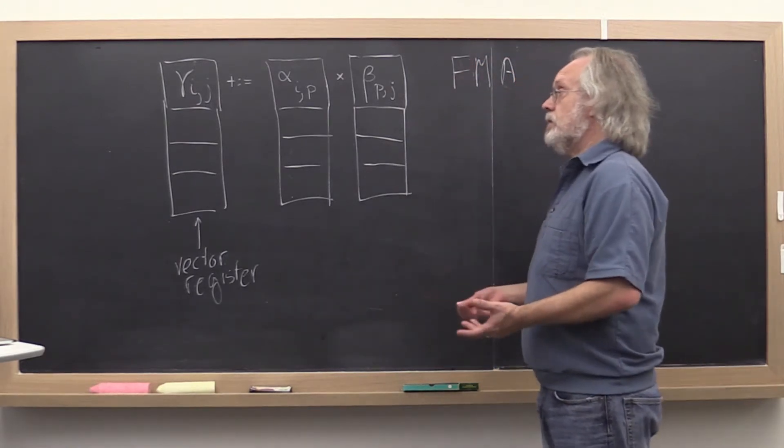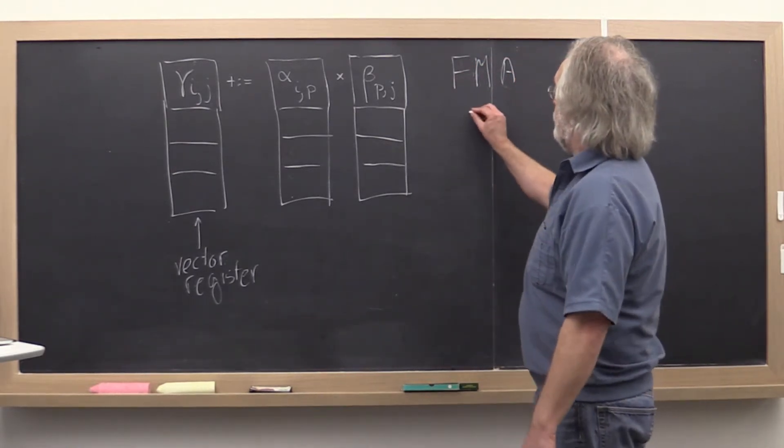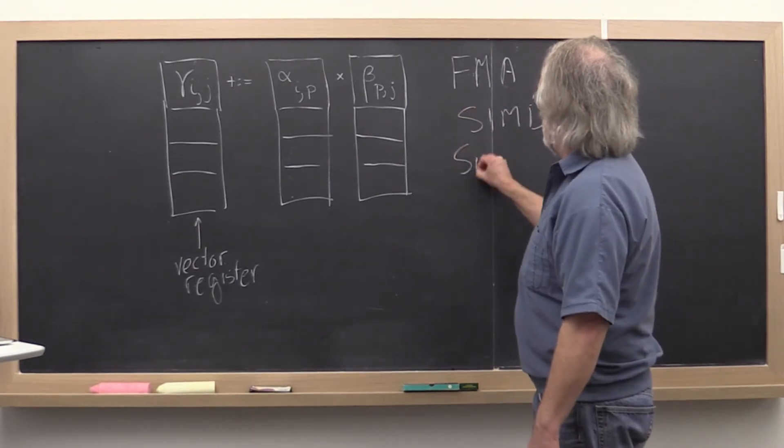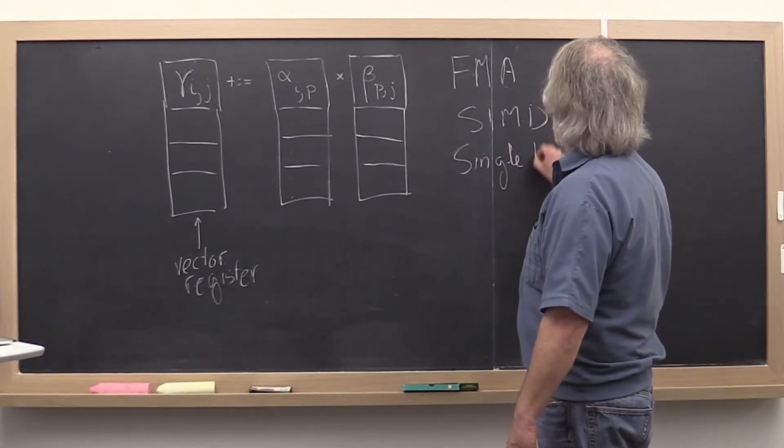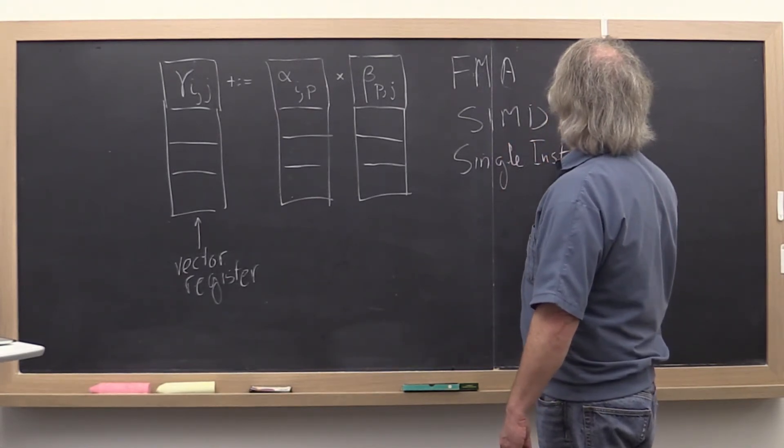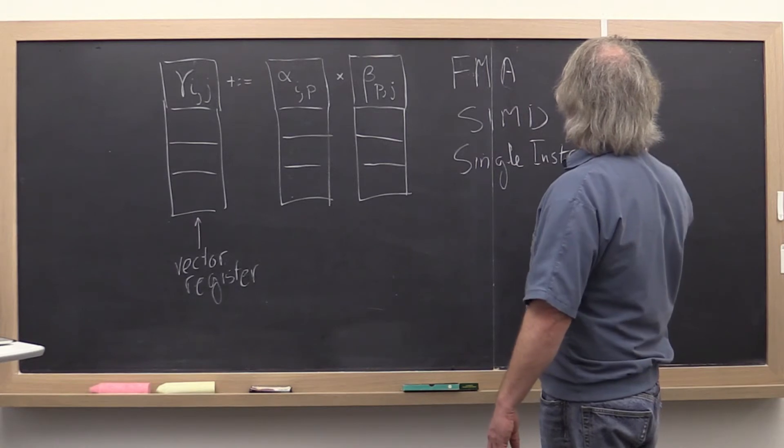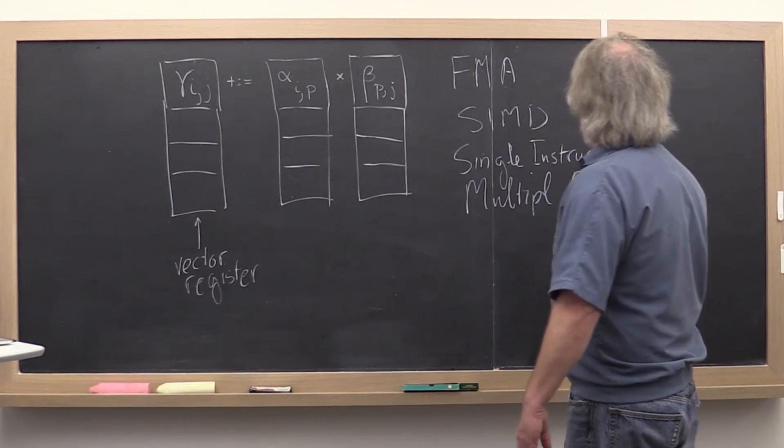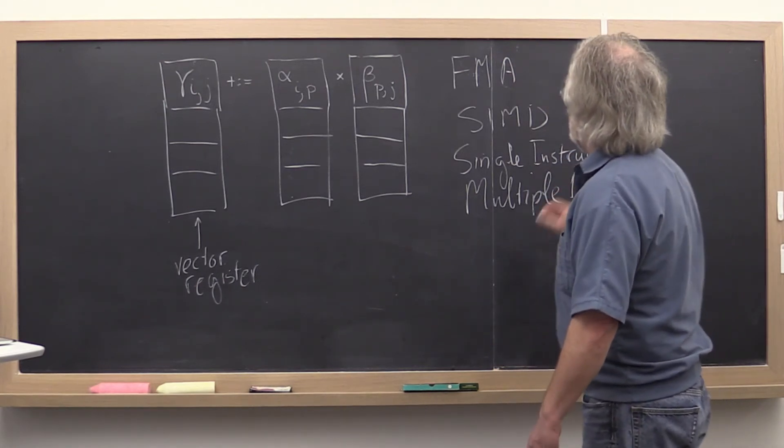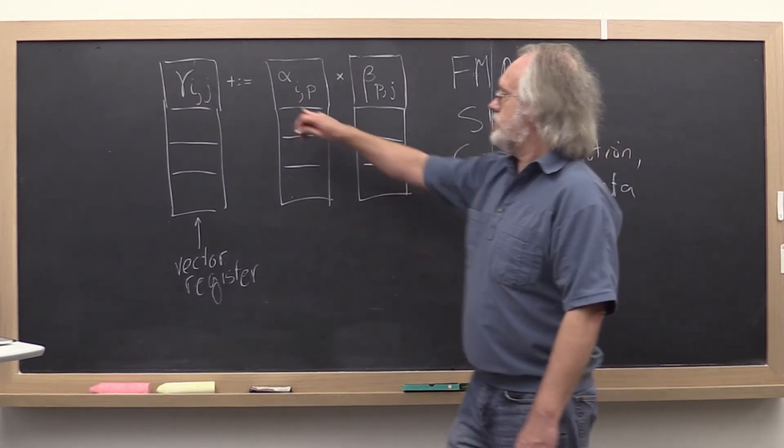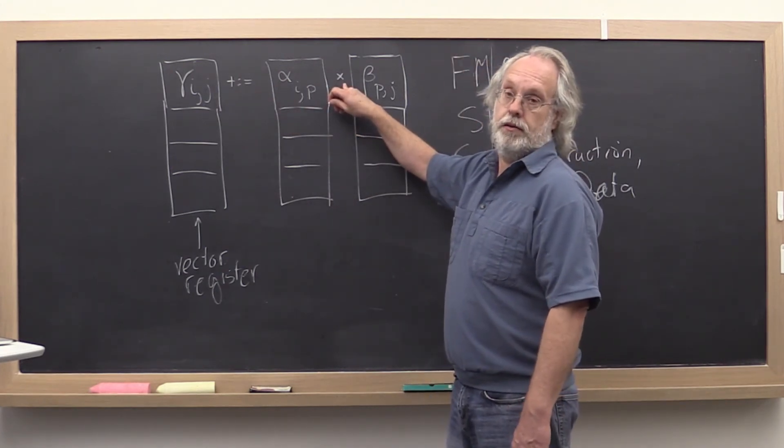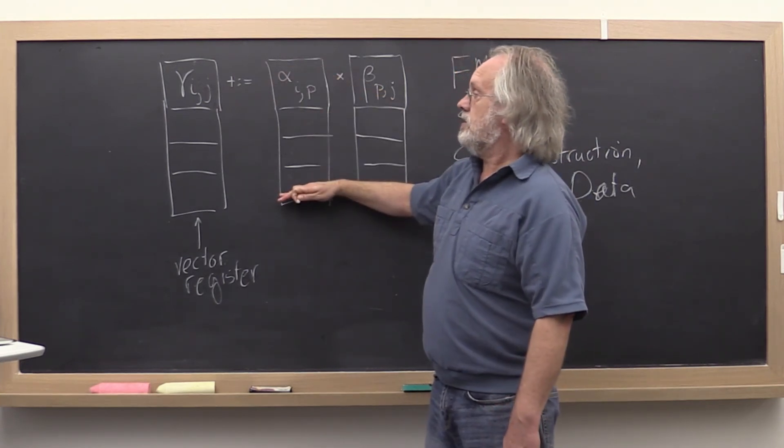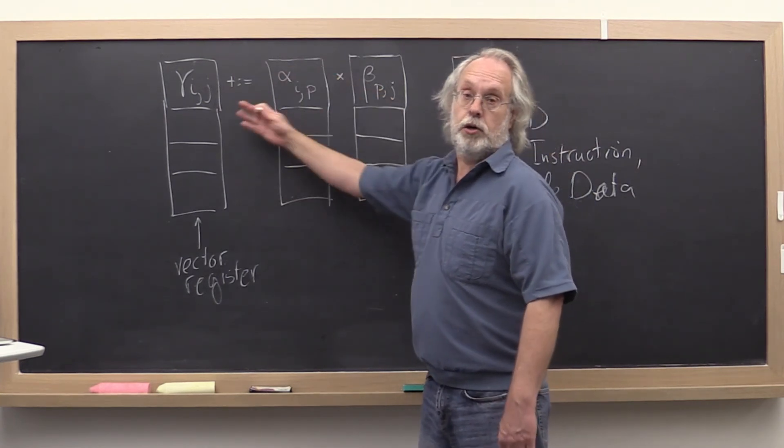And the kind of parallelism we get out of that is often referred to as SIMD parallelism. SIMD stands for Single Instruction, Multiple Data. Where does that come from? The instruction is still an FMA, a fused multiply-add. But we're now doing that same instruction simultaneously on multiple sets of data.